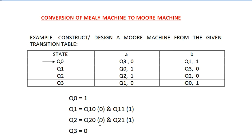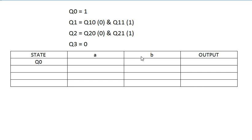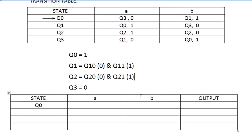After analyzing all these things, we have to design a transition table for the Moore machine. The table will have states, inputs, and output columns. This table definitely defines a Moore machine because for every state there is a corresponding output. Before filling this table, we have to analyze how the process is going.